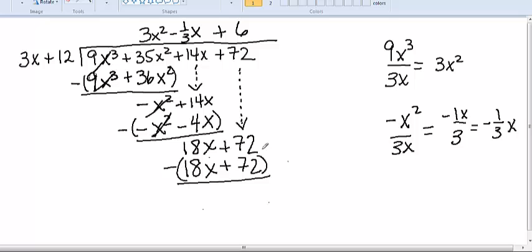Now we subtract. And because these are identical, the remainder, in this case, is 0. So what we just found is that the solution is the polynomial 3x squared minus 1 third x plus 6.